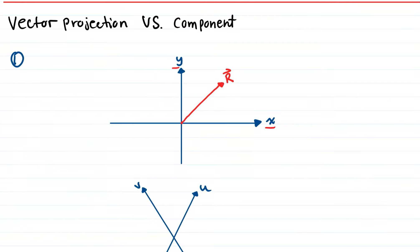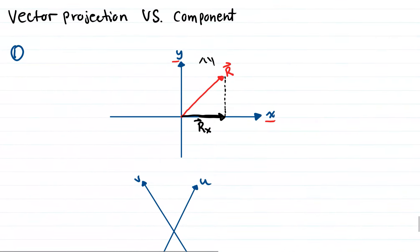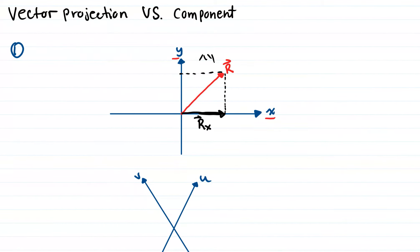Projection means a shadow of the vector on the x axis or the y axis. If you imagine that we have a light source, that light will create a shadow. So what we are drawing now is the shadow of vector r. We will call this shadow rx. We will also create another shadow on the y axis and call it ry.